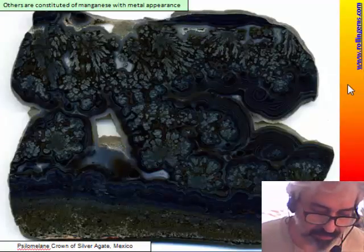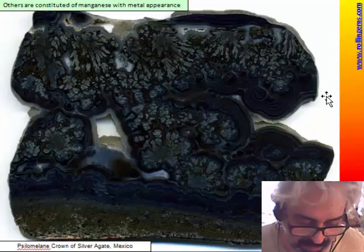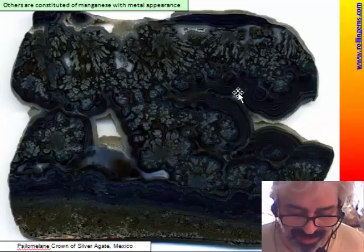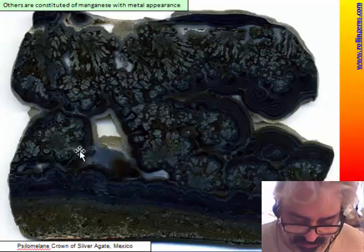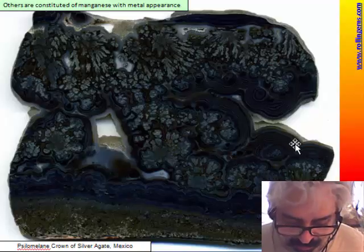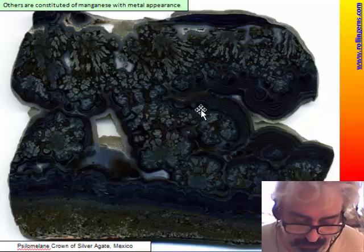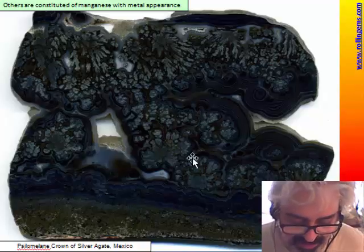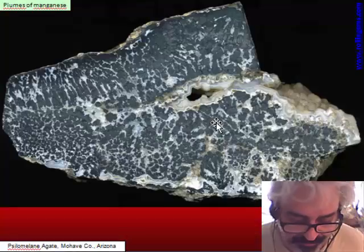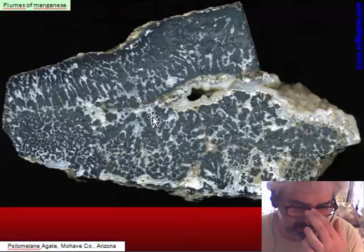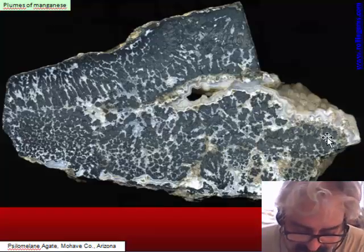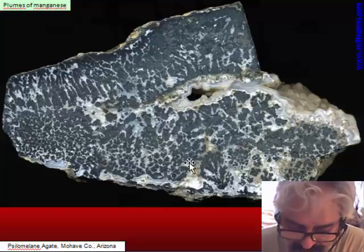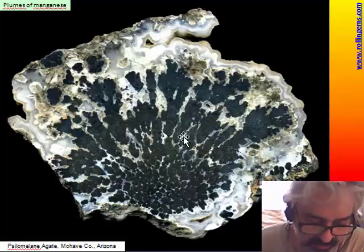Another kind of material is psilomelane — called sillomeline in America — a mix of manganese oxide. The plume has a very metallic appearance, and even the banded portions are completely filled by manganese, making the whole piece totally black. There is also a similar manganese plume from Arizona, but in that case the chalcedony is white.